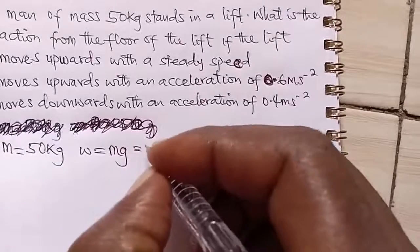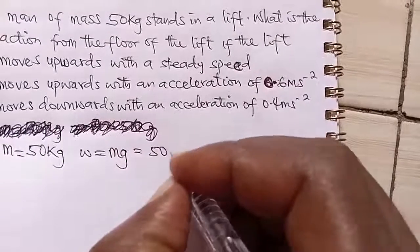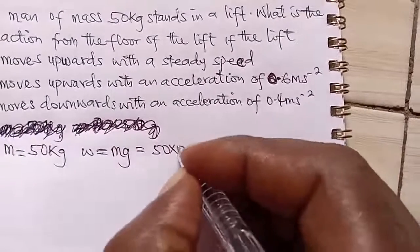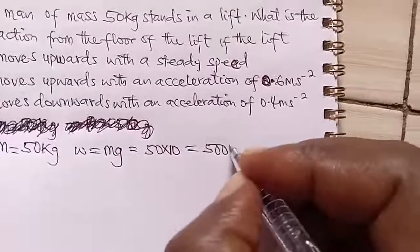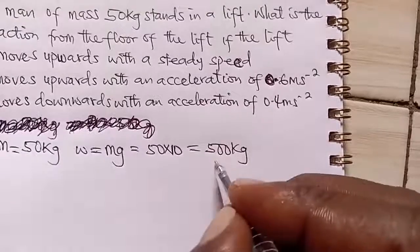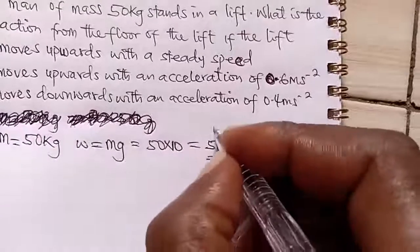So what it means is that m is 50 times our acceleration due to gravity is 10. So this gives us 500. So it means that our reaction R is 500.